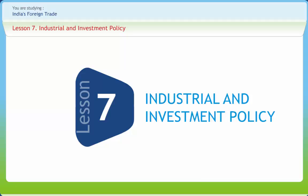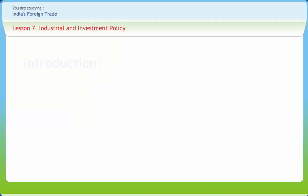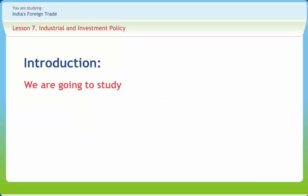Industrial and Investment Policy. Industrialization is an important element of economic growth. Considering the importance of industrialization, the Government of India announced the first industrial policy in 1948. Many changes were made in the policy several times, and the new economic policy was brought out in 1991. The present industrial policy focuses on the globalization of Indian economy.